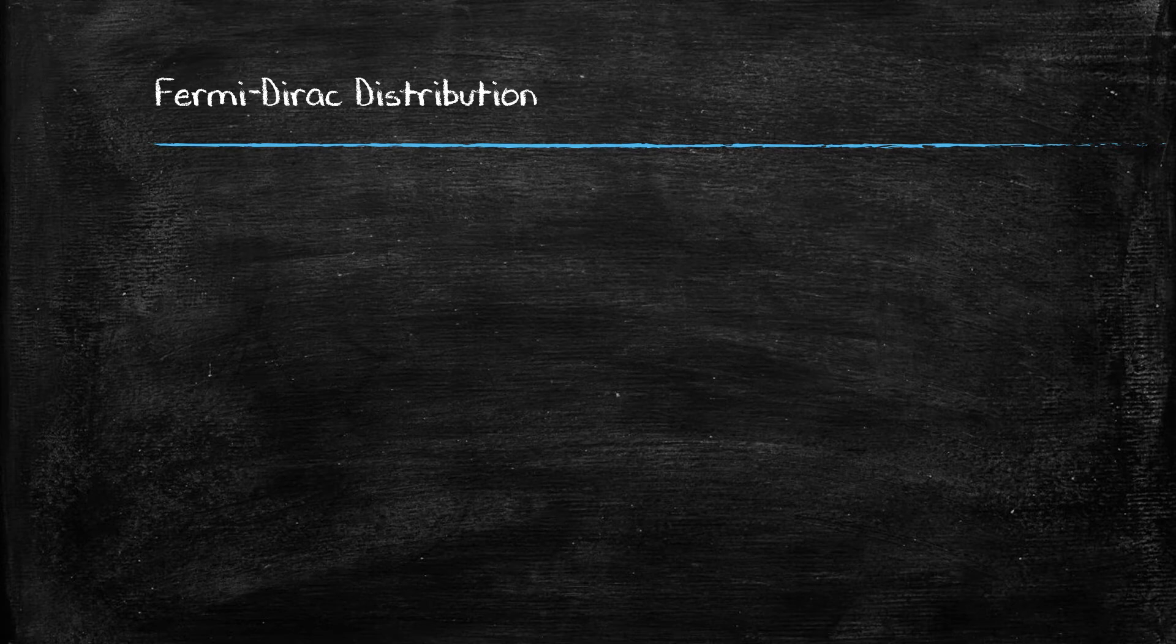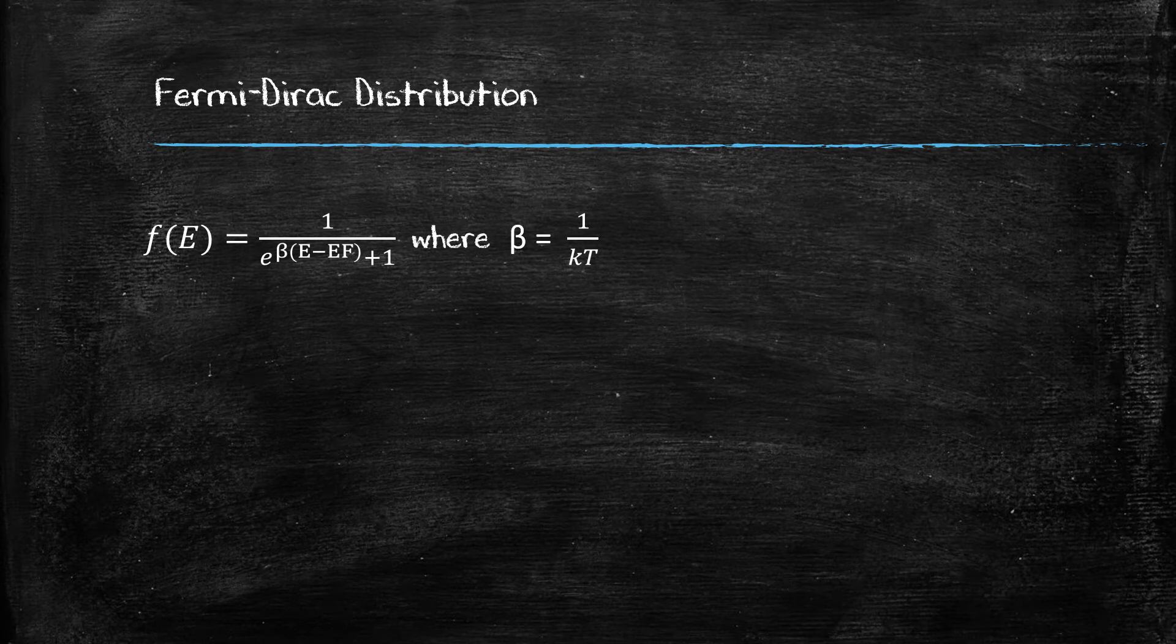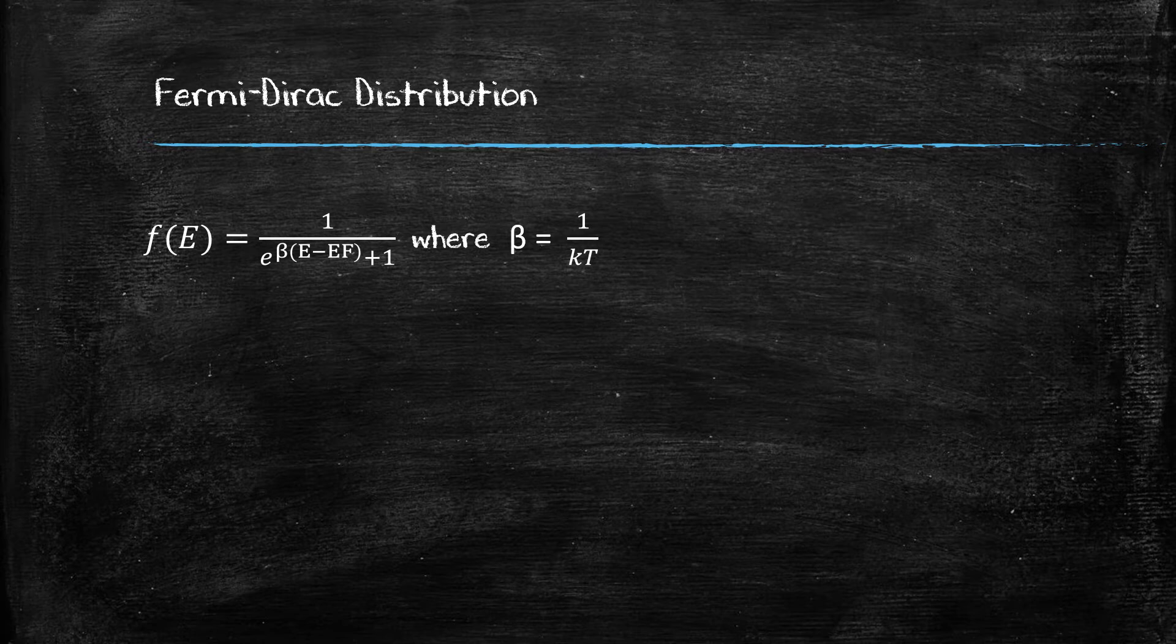Now this energy can be used to understand the Fermi-Dirac distribution equation, that describes the probability of finding a fermion, or in this case an electron, at an energy E with respect to the Fermi energy we just calculated, which is the topmost energy filled when the temperature equals zero. The distribution is described by the equation f(E), which is dependent on the electron's energy in question, the Fermi energy which we just calculated, and the temperature T in the factor beta.